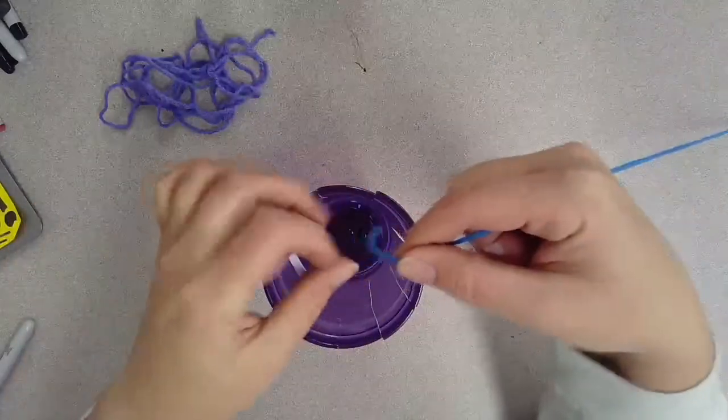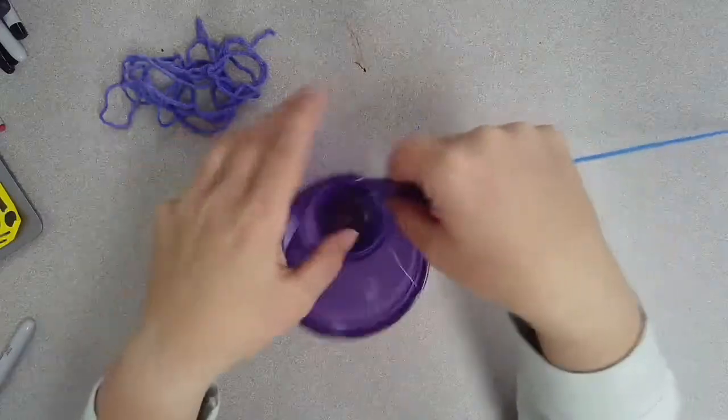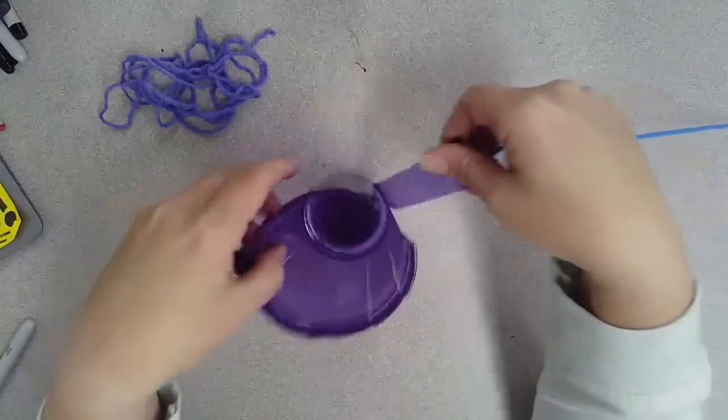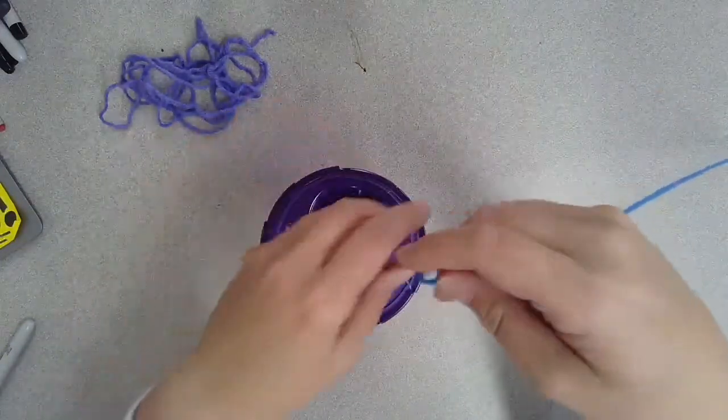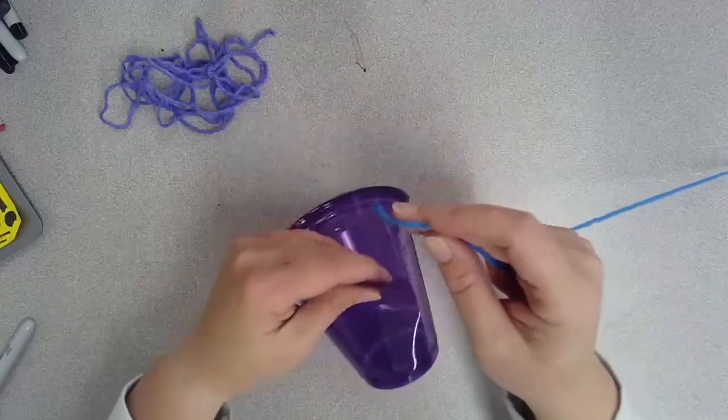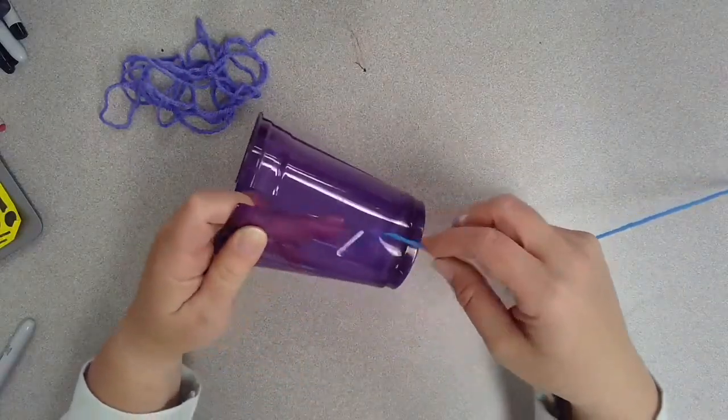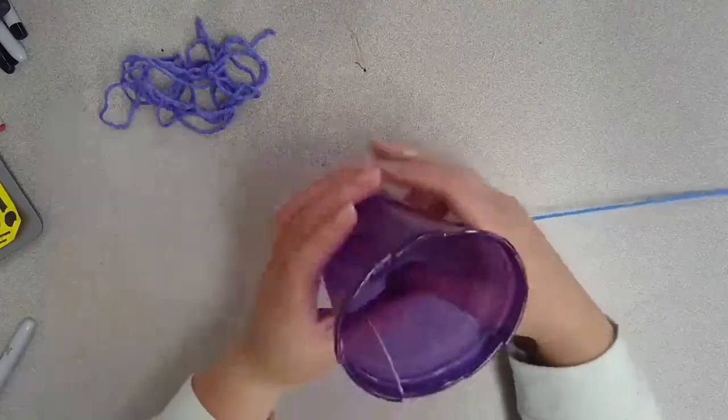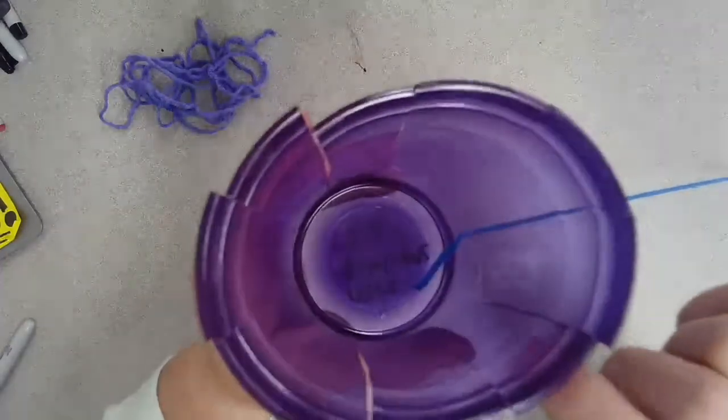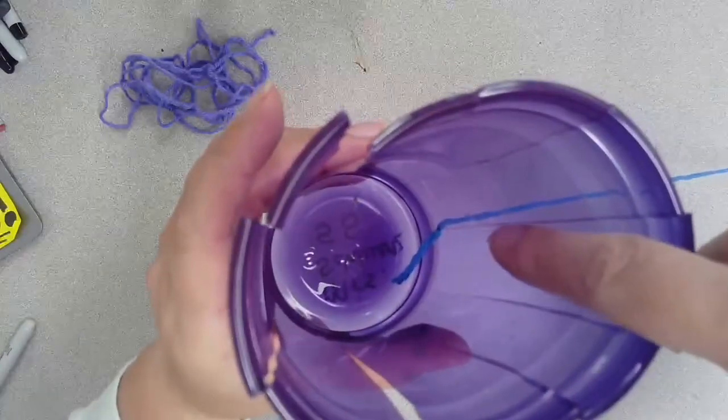Leave a little tail inside your cup. We will cut it off later. Make sure that it's all the way down at the bottom when you first start. You can see the little tail inside.